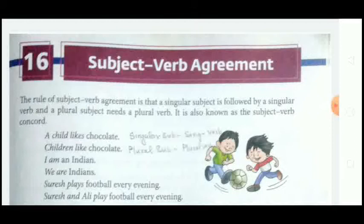By example: 'A child likes chocolate' — here 'child' is a singular subject, so the verb 'likes' is also in singular form. 'Children like chocolate' — here 'children' is a plural subject (more than one), so the verb 'like' is also in plural form. Next example: 'I am an Indian' — here 'I' is a singular subject, so we use the verb 'am' which is singular.